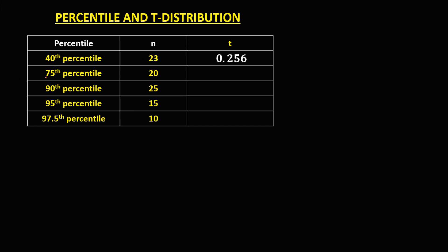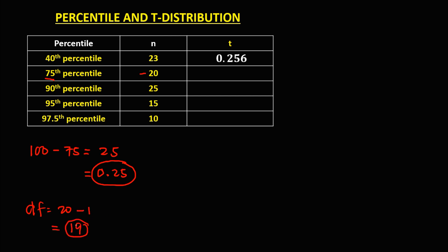For this 75th percentile, we have 100 minus 75, so that's 25. Then convert this one to decimal — that's 0.25. This is now the area to the right of this 75th percentile. To find the degrees of freedom, that's 20 minus 1, so the degrees of freedom is 19.